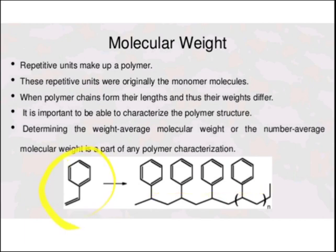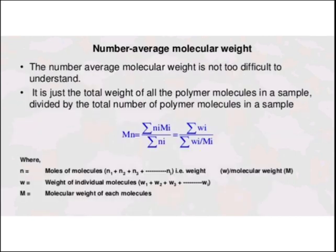A monomer unit — this is a repeating unit — and you can write n times this repeating unit is attached to the chain. Determining the weight average molecular weight or the number average molecular weight is a part of any polymer characterization. Now we will find out the number average molecular weight. It is not very difficult to understand how it is calculated.